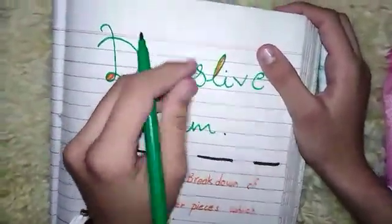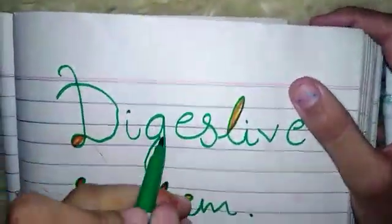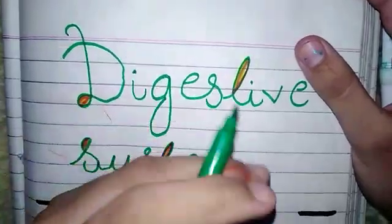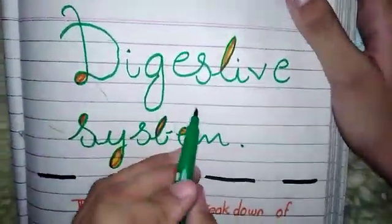As there are many systems, our body consists of different kinds of systems, like reproductive system, circulatory system, respiratory system. One of them is digestive system.